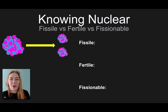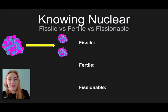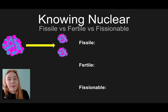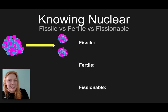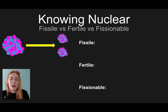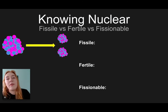Hey everyone, welcome back to Knowing Nuclear. In order for a fuel to be of any use to us in a nuclear reactor, it must be able to undergo fission and it must be able to sustain a chain reaction. In today's video we'll be discussing the differences between fissile, fertile, and fissionable materials.